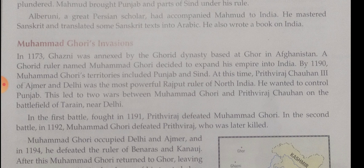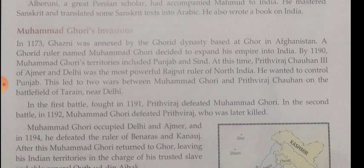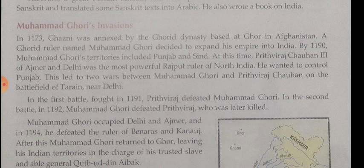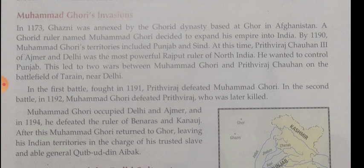Qutbuddin Aibak was Muhammad Ghori's slave or servant — Mamluk means slave or son of a slave. He started the Slave or Mamluk dynasty and was a generous ruler and a great builder. After the death of Aibak, Iltutmish became the next ruler. After Iltutmish, his daughter Razia ruled until she was murdered in 1240. Then we discussed about Giyasuddin Balban, who was a member of the Khalsa.